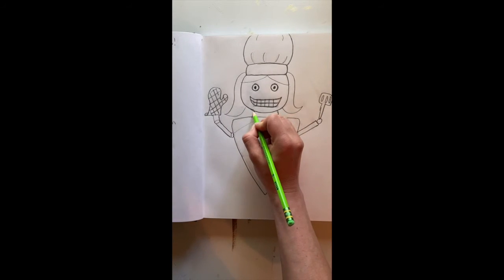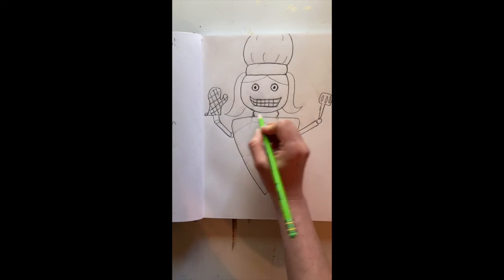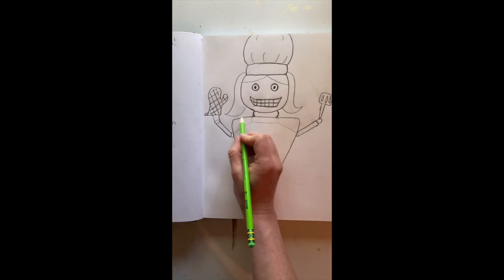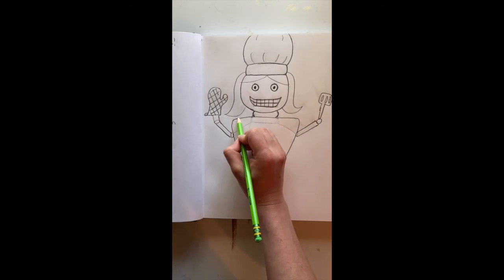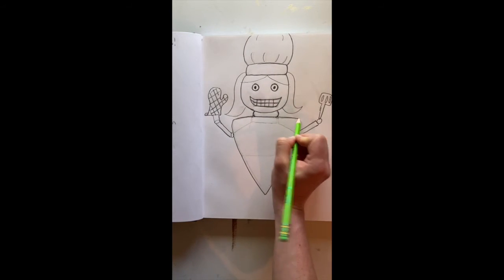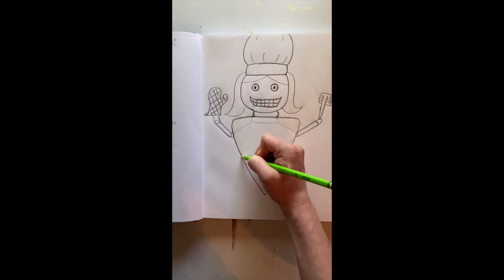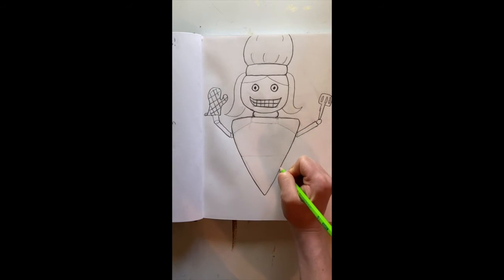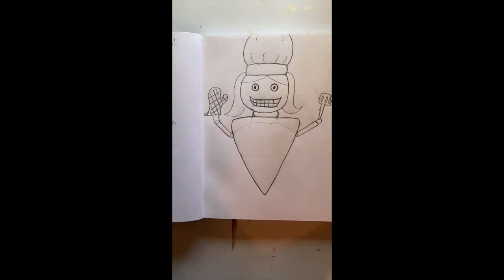Now I did two curved lines here. One is a forwards letter C and a backwards letter C. And that allows me to connect my upside-down triangle, which is the main part of her body.